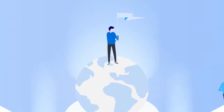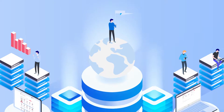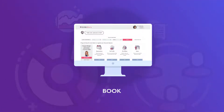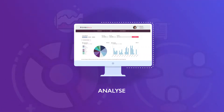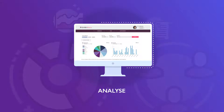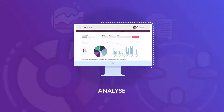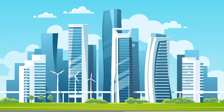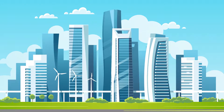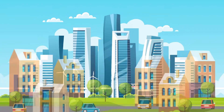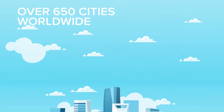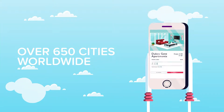Orbi Relo has been developed specifically for the global mobility sector and provides you with the tools to book, monitor and analyse all of your temporary housing requirements. Orbi Relo gives you access to the world's largest portfolio of apartments from all the leading operators and smaller boutique providers. You can make instant online bookings and browse accommodation in over 650 cities around the world.